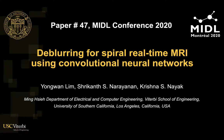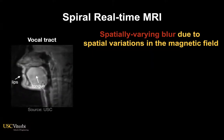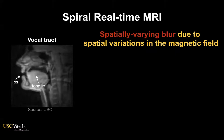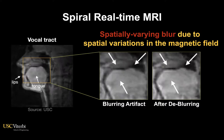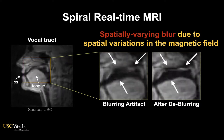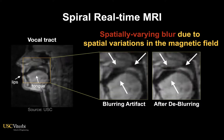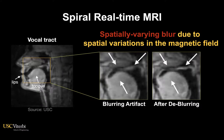Hello everyone. Here I will be briefly talking about our recent work on deep learning for spiral real-time MRI using CNN. Spiral real-time MRI is one of the widely used techniques for speech imaging applications, but it suffers from a spatially varying blur that is most severe at the articulator boundaries. In speech applications, this is the exact location of interest, so we attempt to address this in our work.